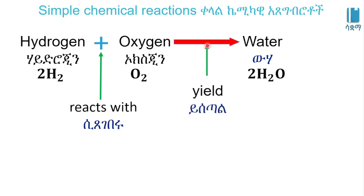How can hydrogen react with oxygen to yield water? Hydrogen reacts with oxygen, and we are able to get water. This is the chemical reaction that we have to use.